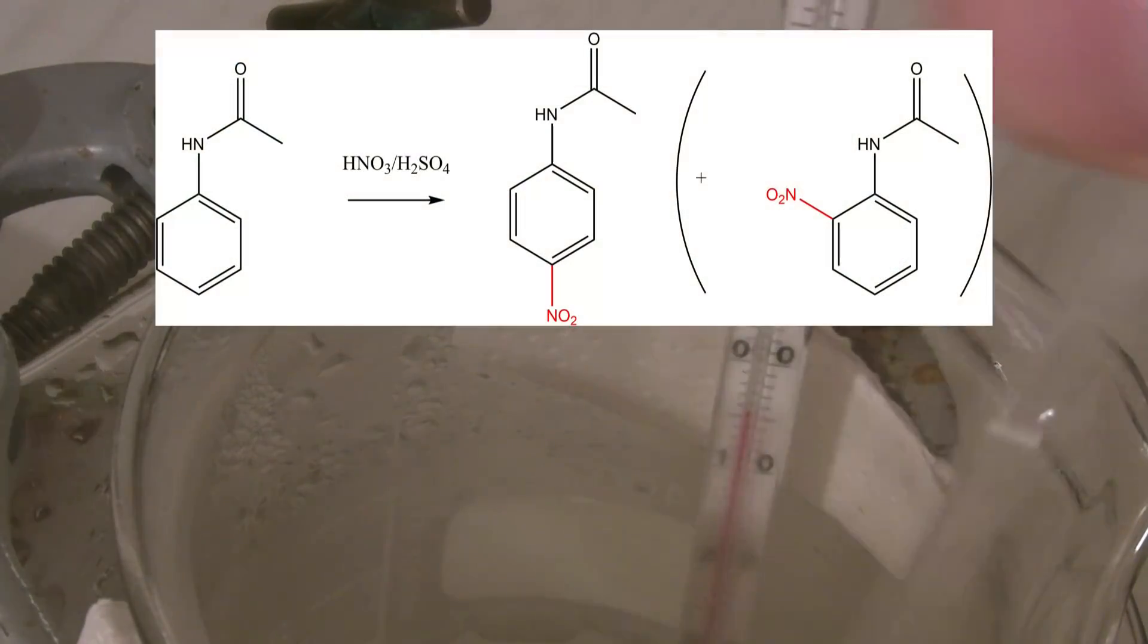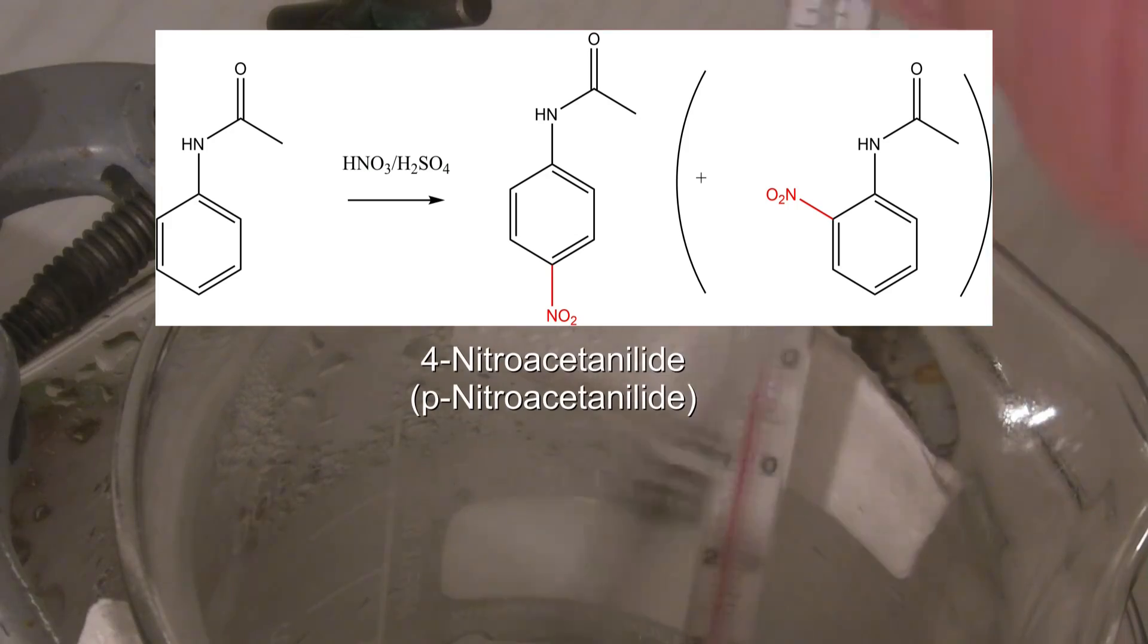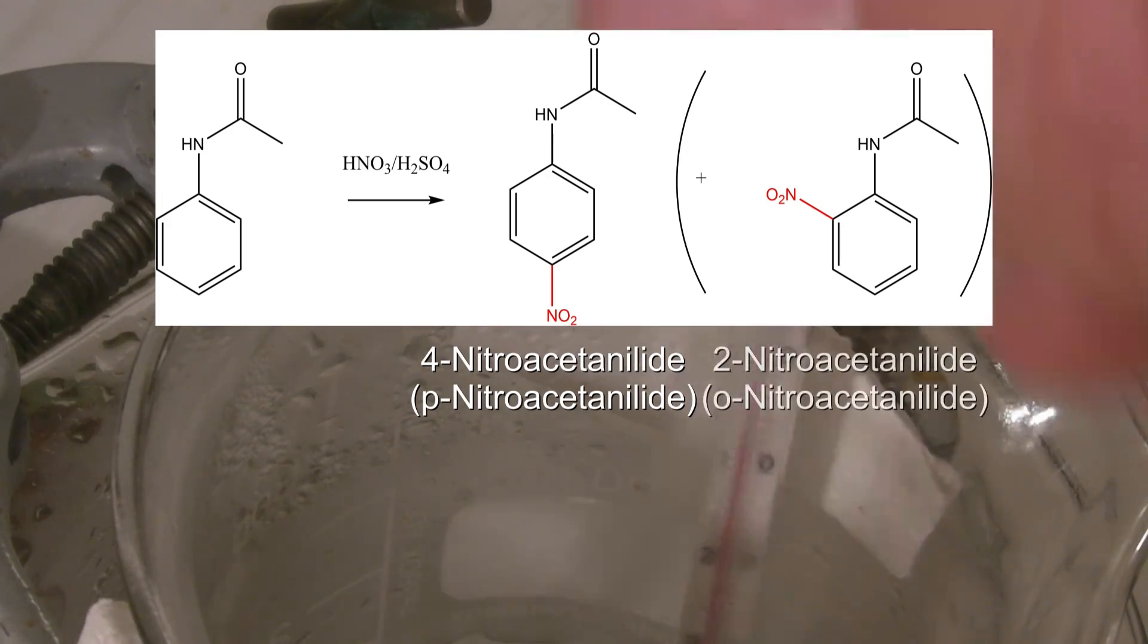The following reaction takes place. The acetanilide is mainly nitrated at the fourth carbon or para position and 4 or p-nitroacetanilide are formed. As a side product small amounts of 2-nitroacetanilide are also formed.